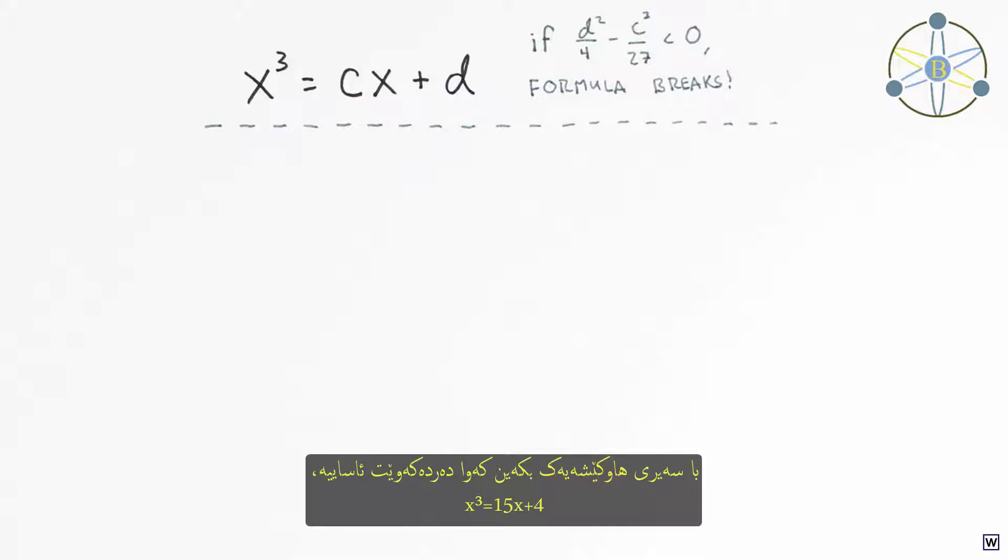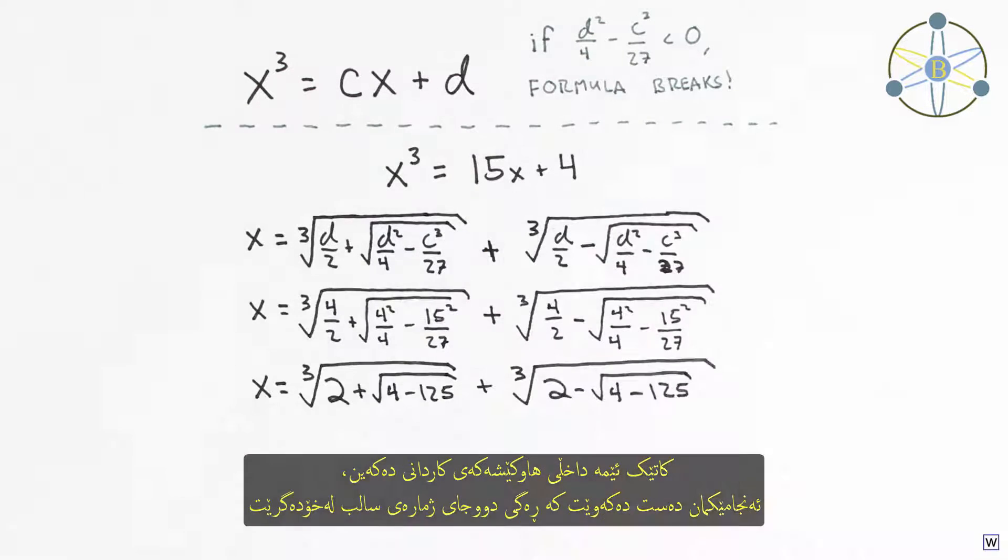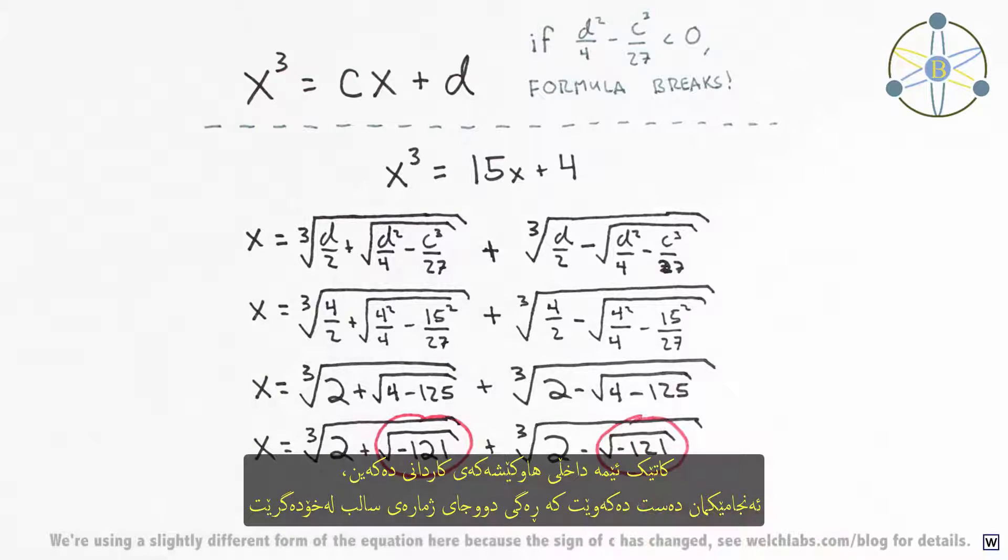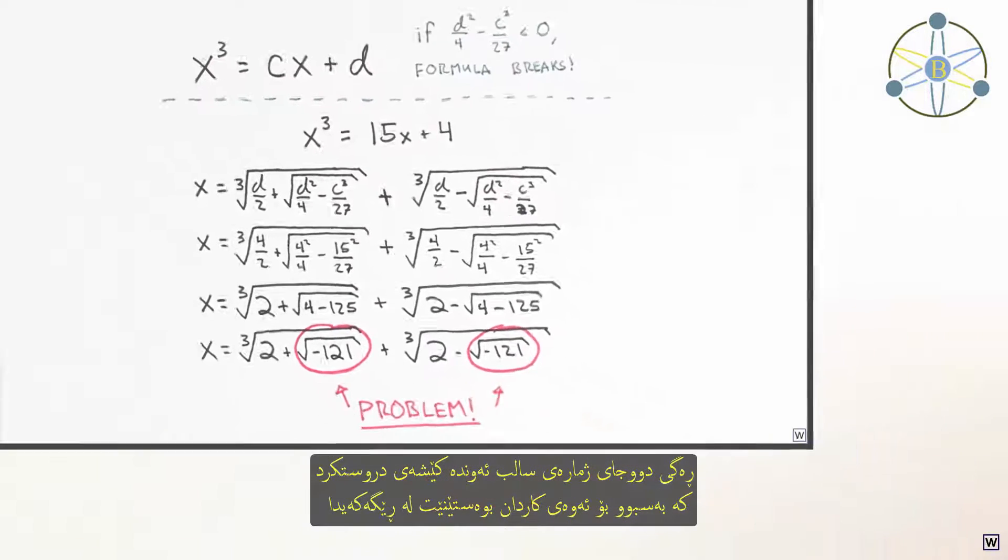Let's take the innocent looking equation x cubed equals 15x plus 4. When we plug into Cardan's formula, we get a result that involves the square root of negative numbers. The square root of a negative number created enough of a problem to stop Cardan in his tracks.